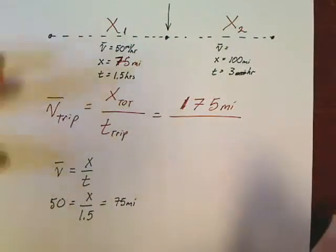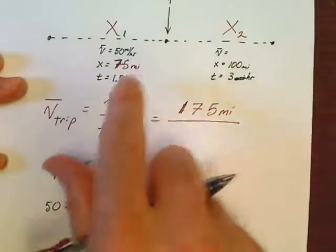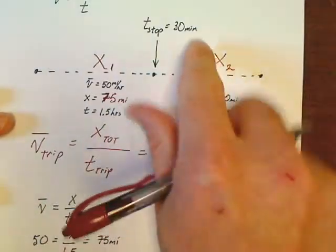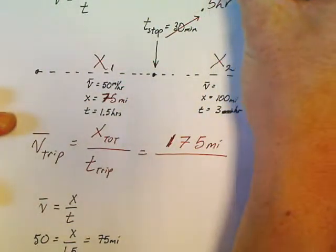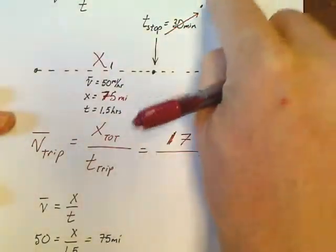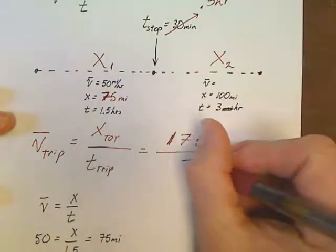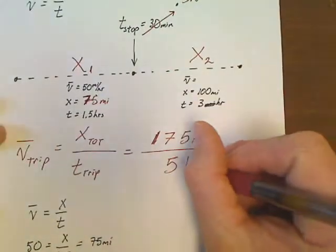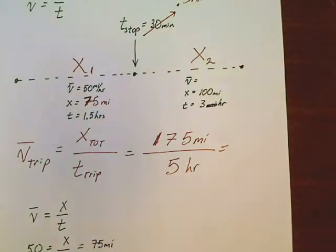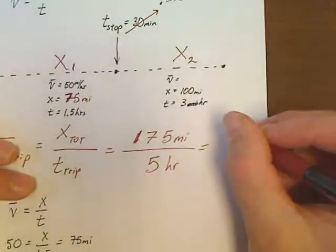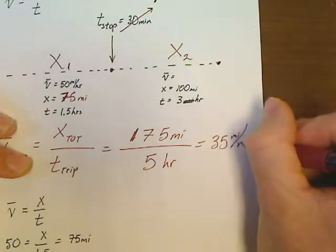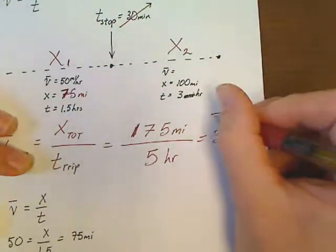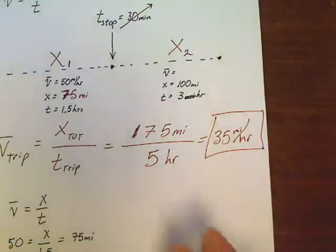Now, if you want to know the time for the entire trip, all we've got to do is add up all the times. Well, 30 minutes is half an hour, and so our total trip is 3.5 plus 1.5, so our total time is 5 hours. If we divide 5 into 175, we get an average velocity of 35 miles per hour.